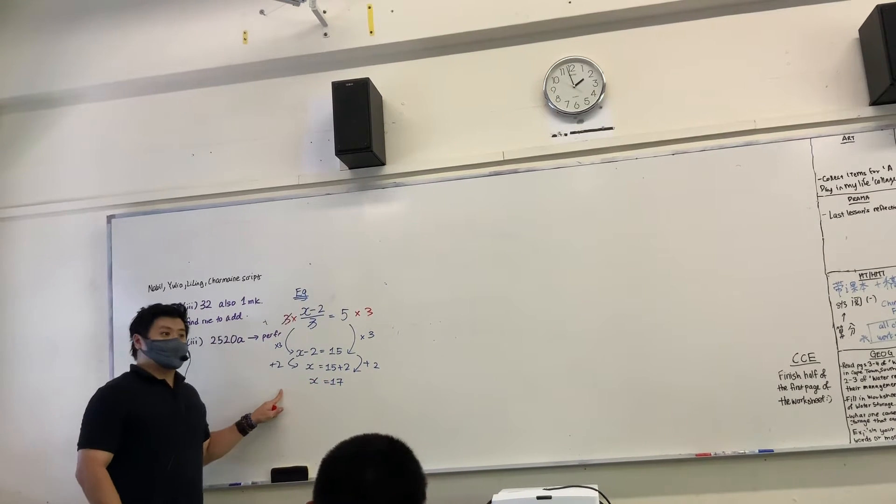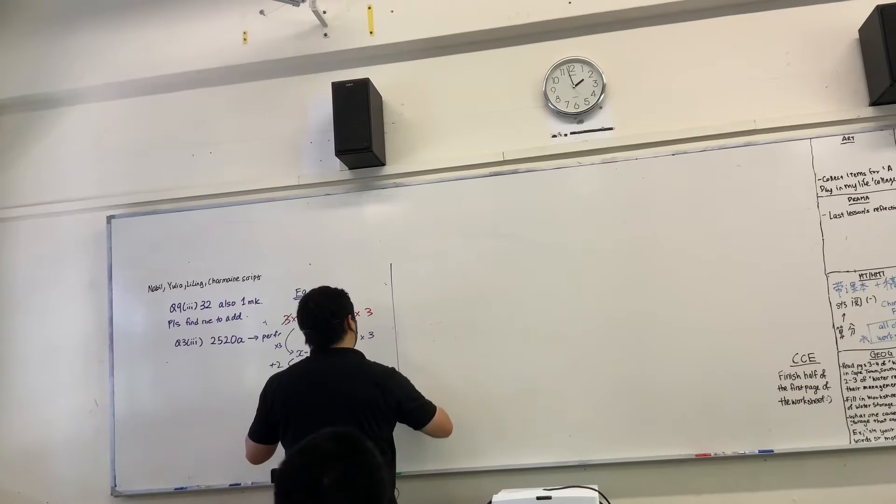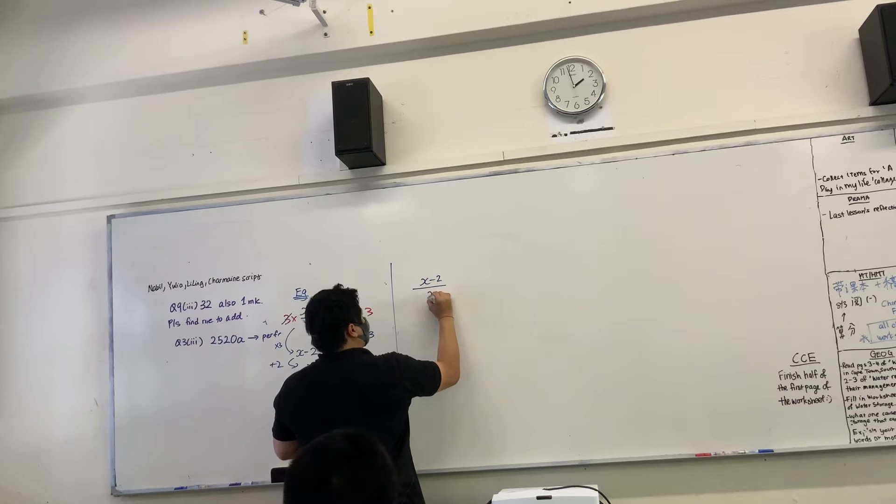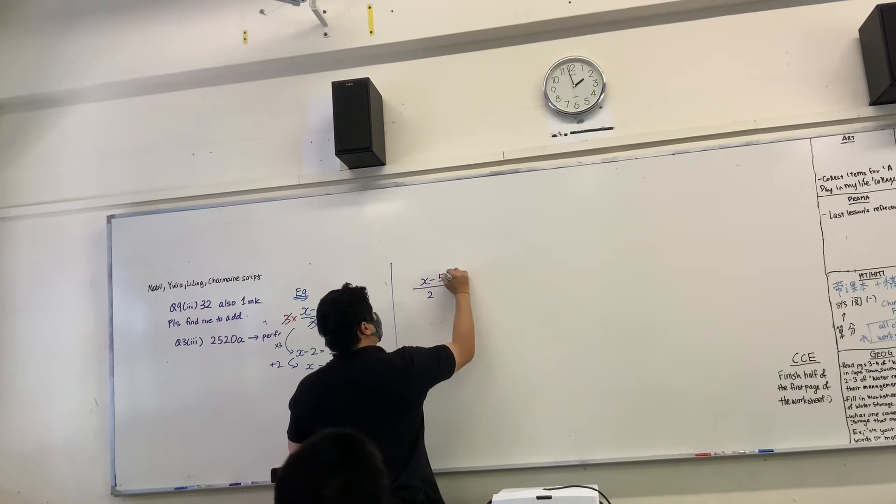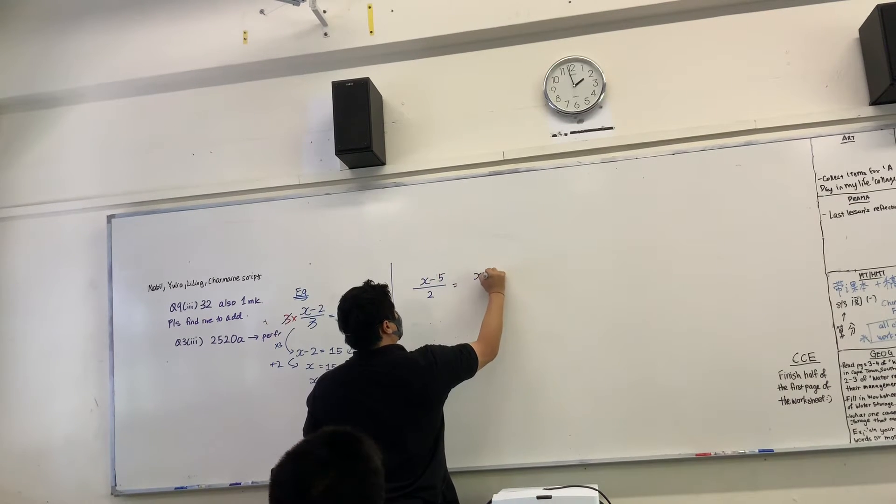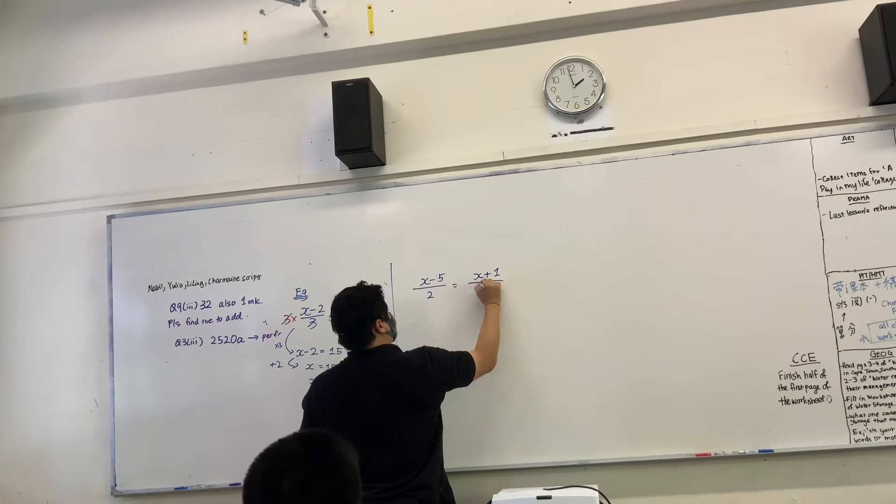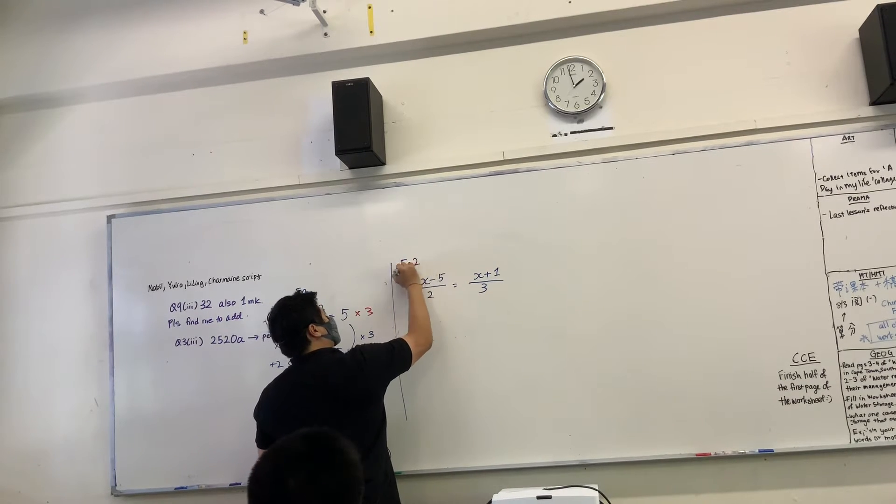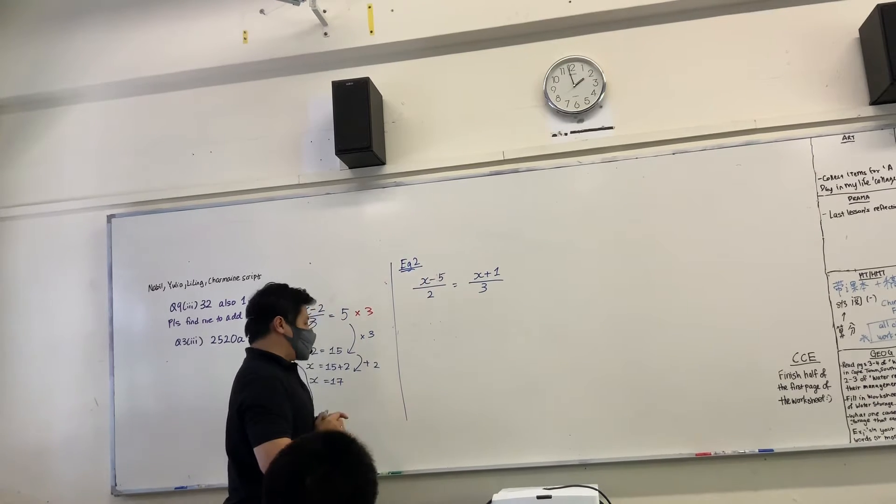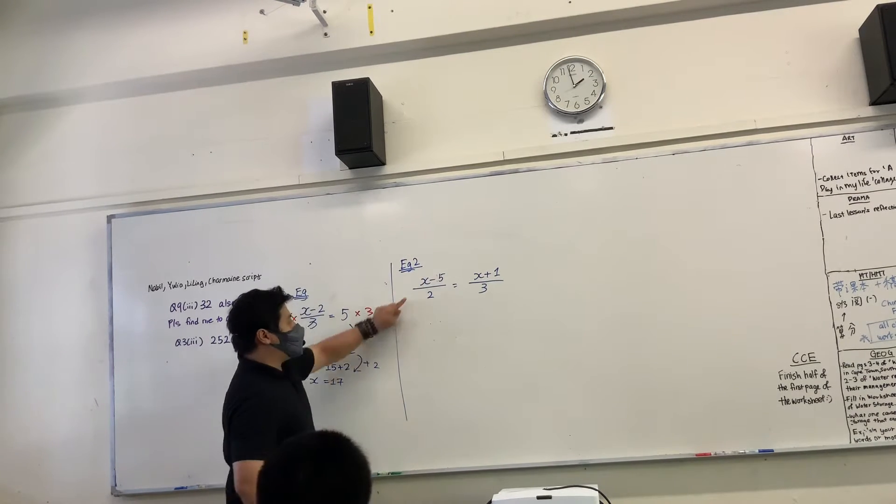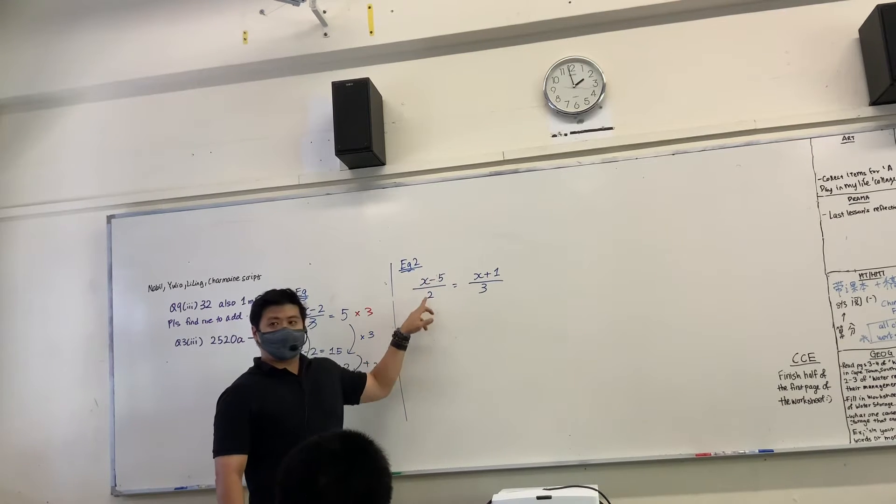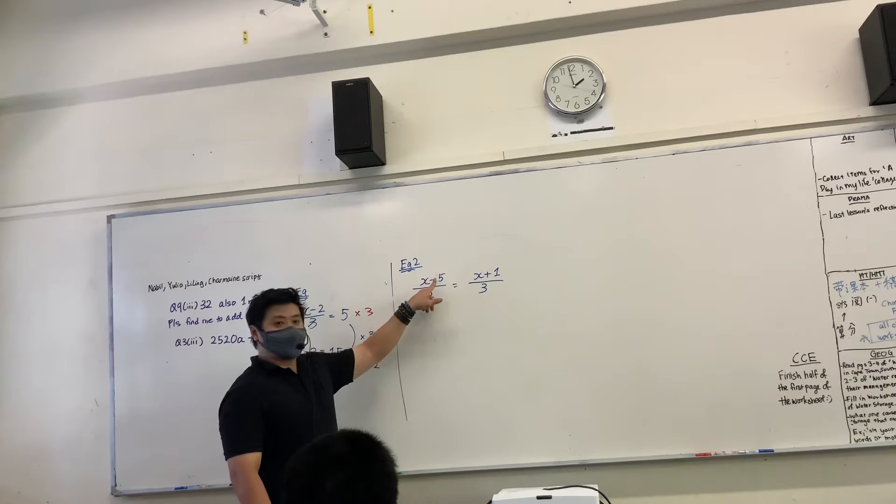Now that's a simple example. What if I have x minus 2 over 2 equals x plus 1 over 3? For example, something like that. I have 2 fractions. To get to the x, do I need to divide first or multiply? Which one first, the 2 or the 5?